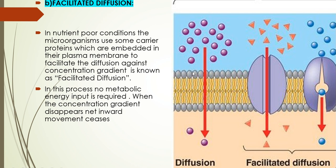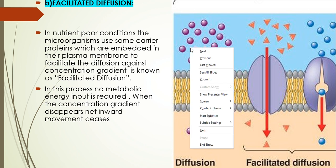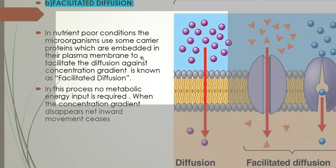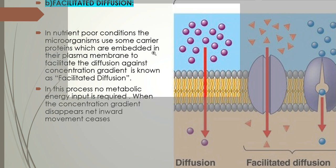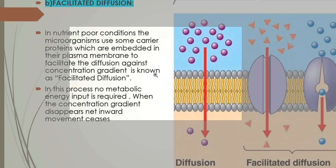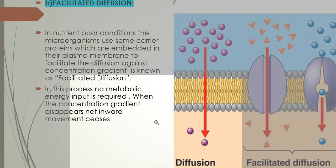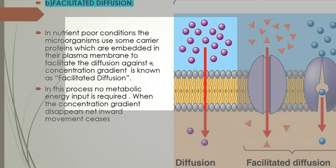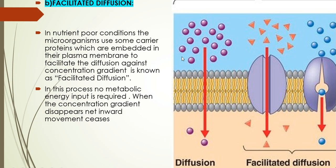Looking at the picture: in passive diffusion, you can see a higher concentration gradient of substrate molecules outside. They pass through the plasma membrane without any energy utilization — that is an important point to remember. Molecules move from higher concentration to lower concentration through the plasma membrane; simply pass from higher to lower.